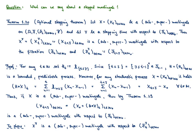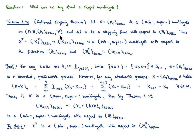Let us now address the question of how the stopped martingale, or stopped super- and sub-martingale, behaves and what property this process has. The first theorem I would like to present is the optional stopping theorem. For that I consider a process X, which should be a martingale — and the same holds for sub- or super-martingales — defined on a filtered probability space (Ω, F, F_t, P). Moreover, I consider a stopping time τ with respect to the filtration F_t.